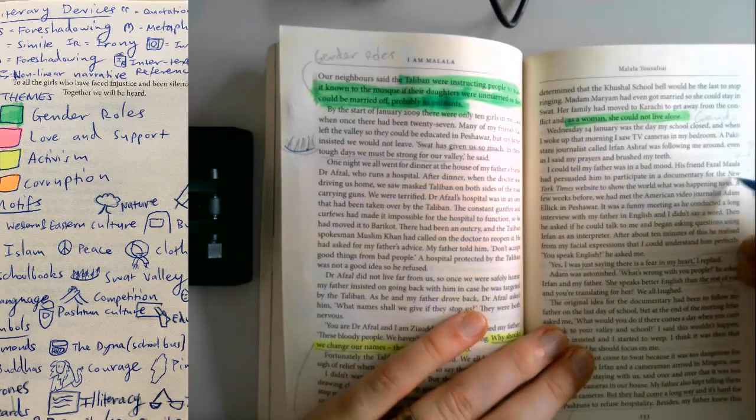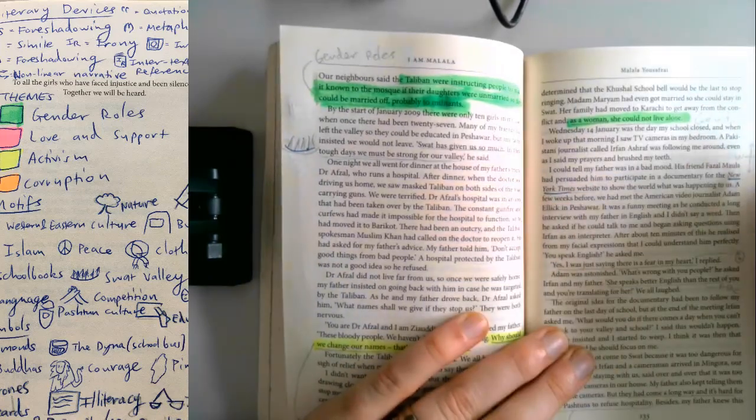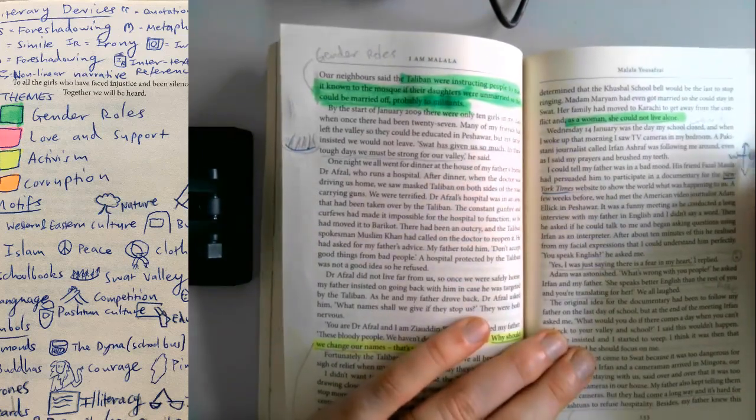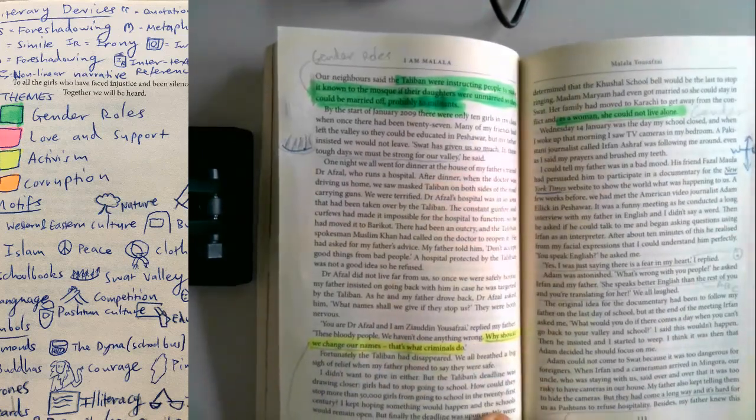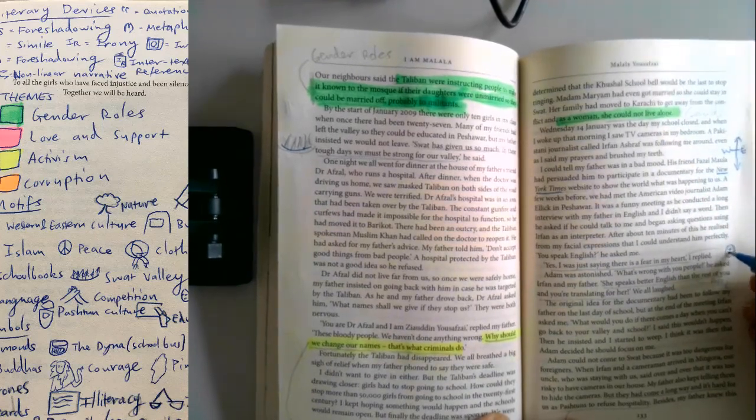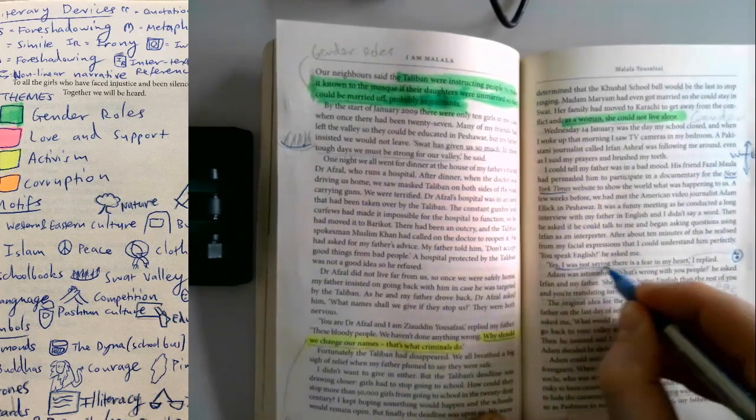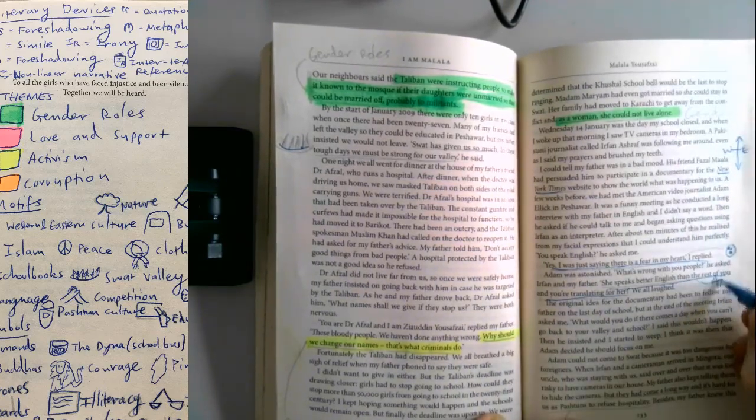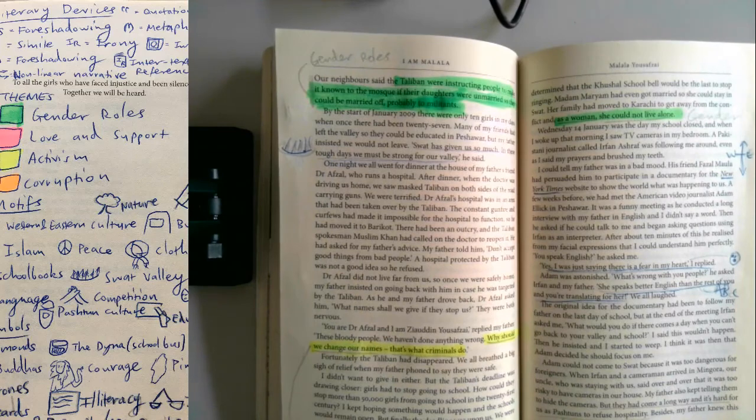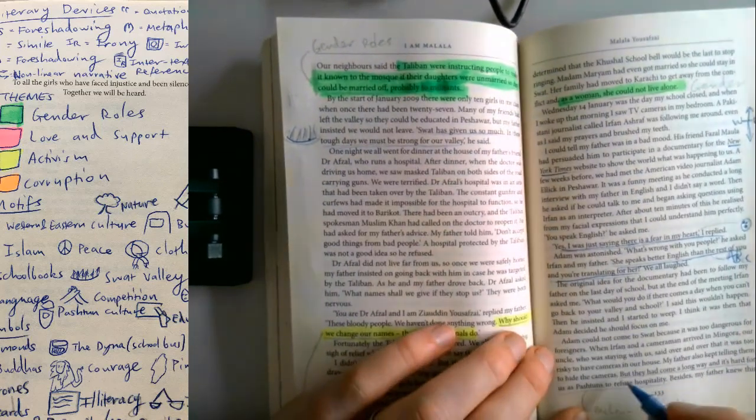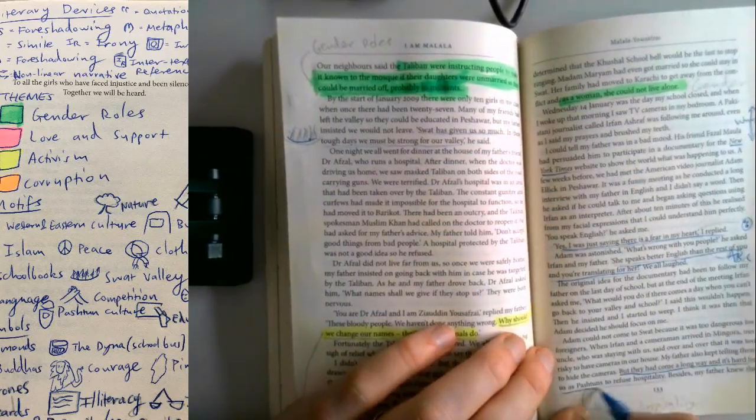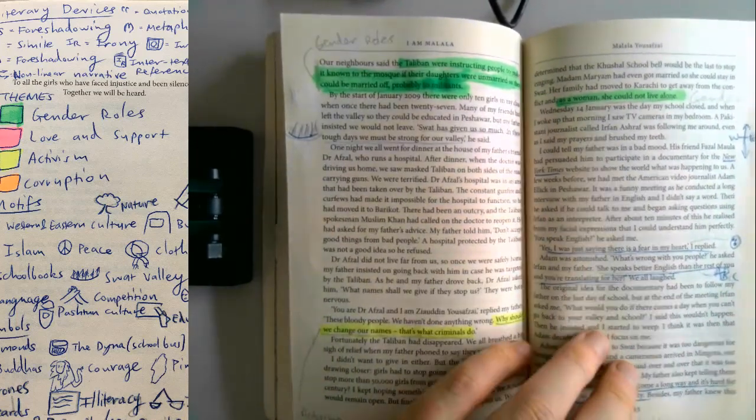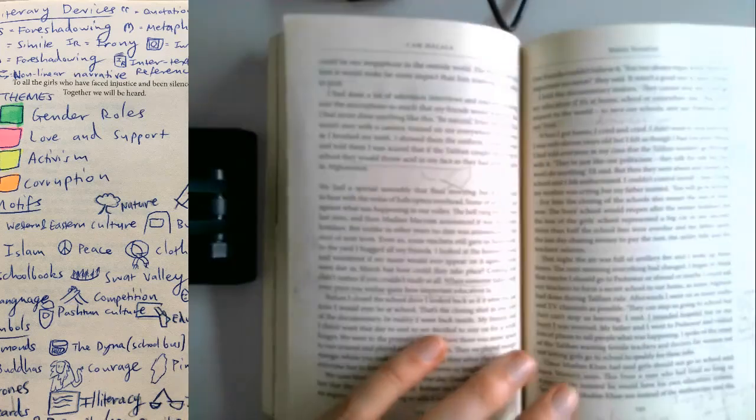New York Times website. So you really see the West and the East tension emerging again. She's sort of becoming a symbol for a lot of different things. She speaks better English than the rest of you who are translating for her. So this is her spending time in the media, recording TV shows and things. But they had come a long way and it's hard for us as Pashtuns to refuse hospitality. So again, it's Pashtun culture as often is the case.